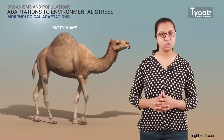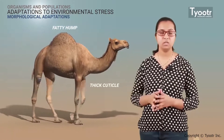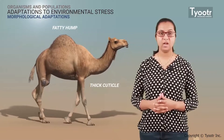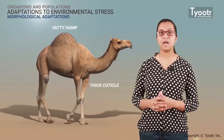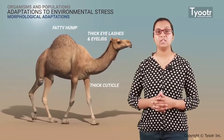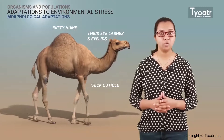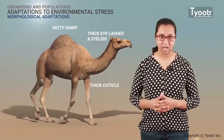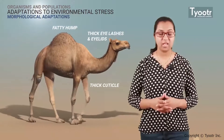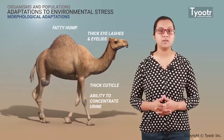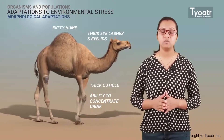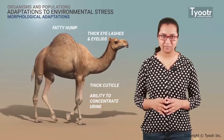The camel also has a thicker cuticle to sustain excess heat of desert regions, and it also has thicker eyelashes and thick eyelids so that sand particles cannot go inside the eyes. Desert camels also have the ability to concentrate their urine, which is again one of the mechanisms to conserve a large amount of water inside them.